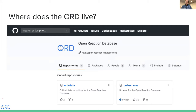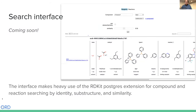We're also building a search interface as part of this. We've been spending a lot of development cycles on the web editor that Connor highlighted, and he's put together some tutorials on YouTube you should check out. We're also in the process of building a search interface, heavily relying on the RDKit — in particular the Postgres extension — which provides excellent tools for doing things like similarity and substructure searching. This will be a core part of the front end and browsing experience of the ORD.